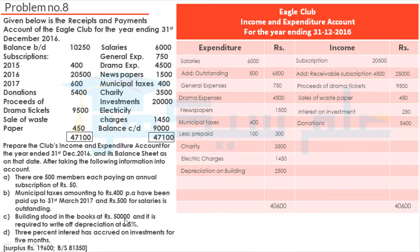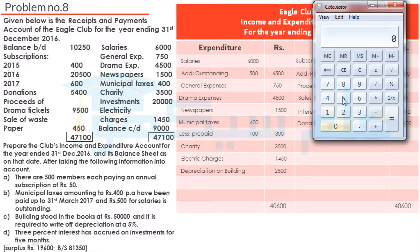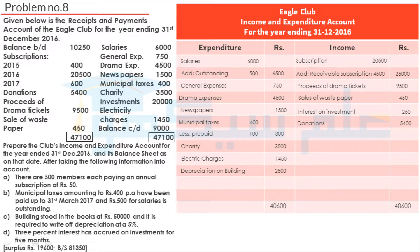Then depreciation on building. Building amount is Rs. 50,000 and depreciation rate is 5%. So 50,000 multiplied by 5% gives depreciation on building Rs. 2,500. So these are all payments and expenses.